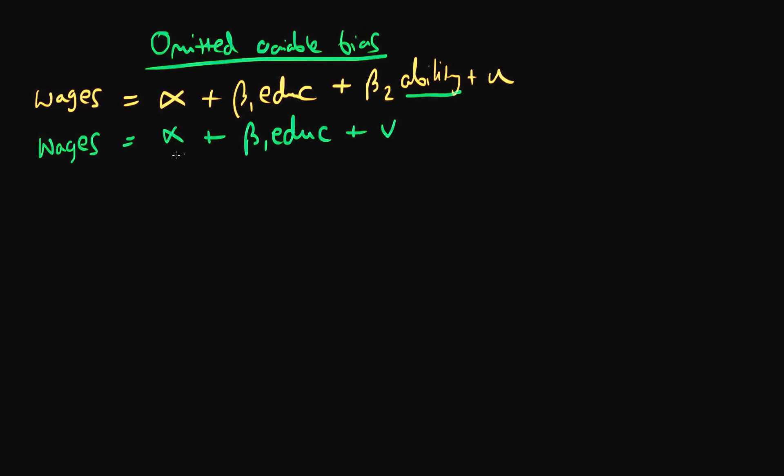So let's say we actually just estimate the following. So we regress an individual's wages on the number of years of education. Well notice that in our estimated error here implicitly we're including a measure of an individual's innate ability because we're not including it in the regression itself.